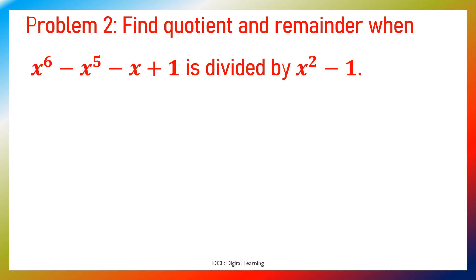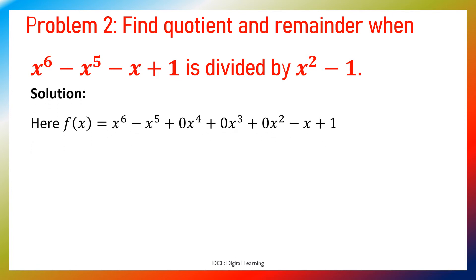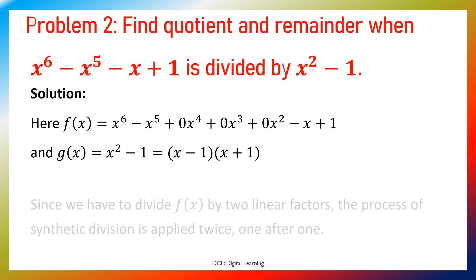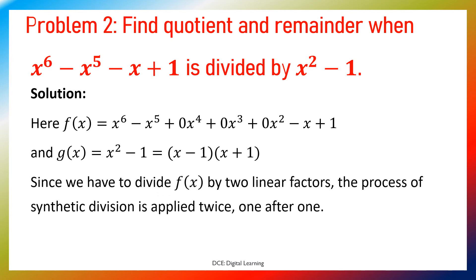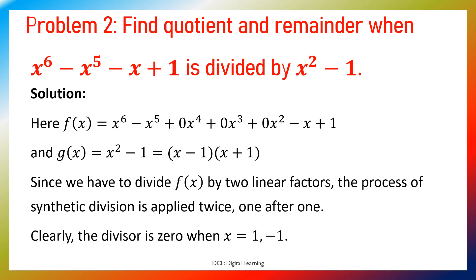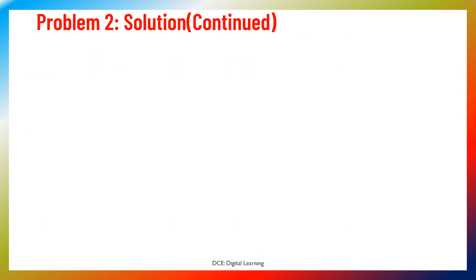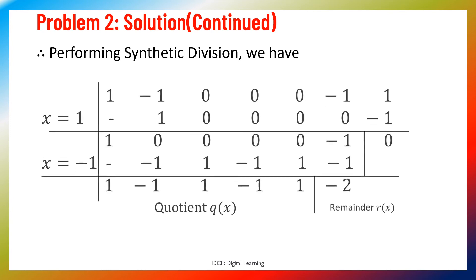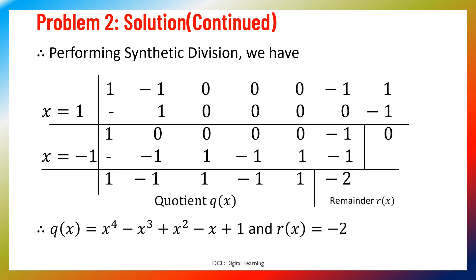Problem 2: Find the quotient and remainder when x⁶ − x⁵ − x + 1 is divided by x² − 1. Here f(x) equals x⁶ − x⁵ + 0x⁴ + 0x³ + 0x² − x + 1, and g(x) equals x² − 1 equals (x−1)(x+1). Since we divide by two linear factors, synthetic division is applied twice. The divisor is 0 when x equals 1 and −1. The quotient is x⁴ − x³ + x² − x + 1, and the remainder is −2.